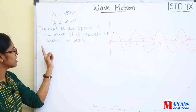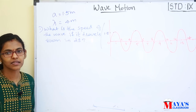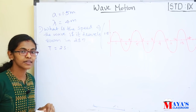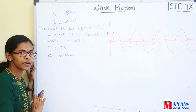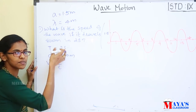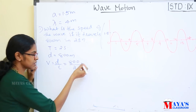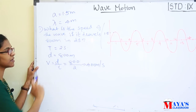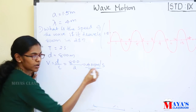What is the speed of the wave if it travels 800 meters in 2 seconds? We use the general equation: v is equal to distance by time. Speed equals 800 divided by 2 — that is 400 meters per second. Therefore, speed is equal to 400 meters per second.